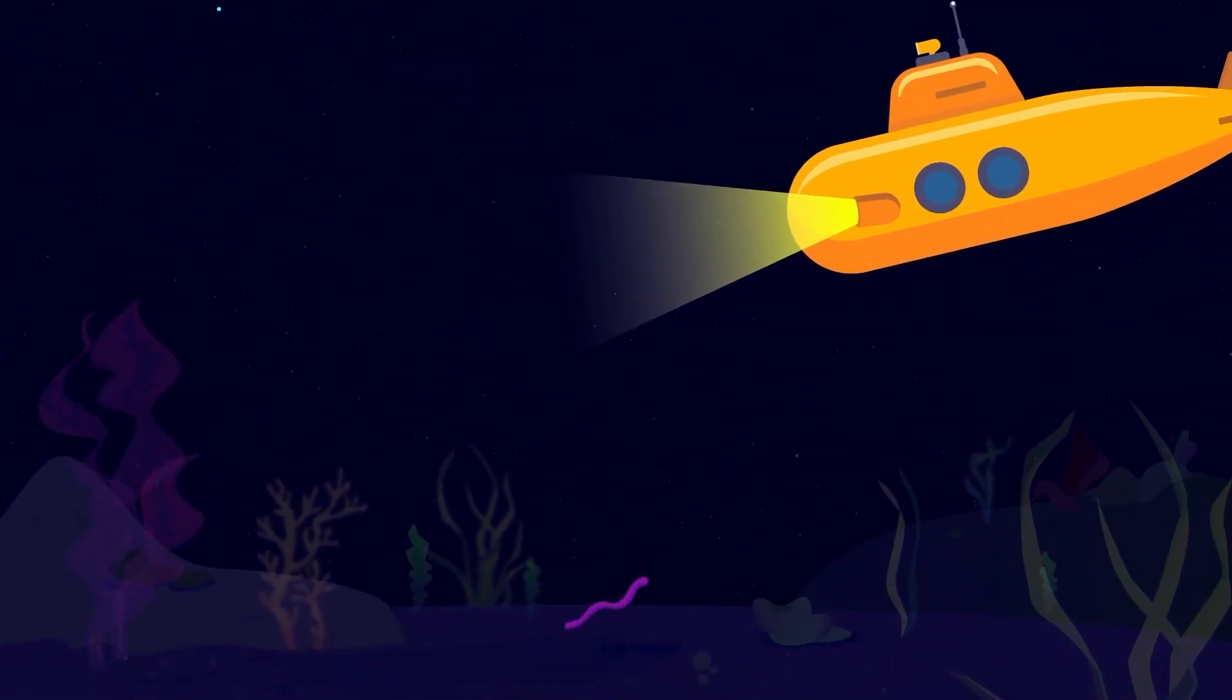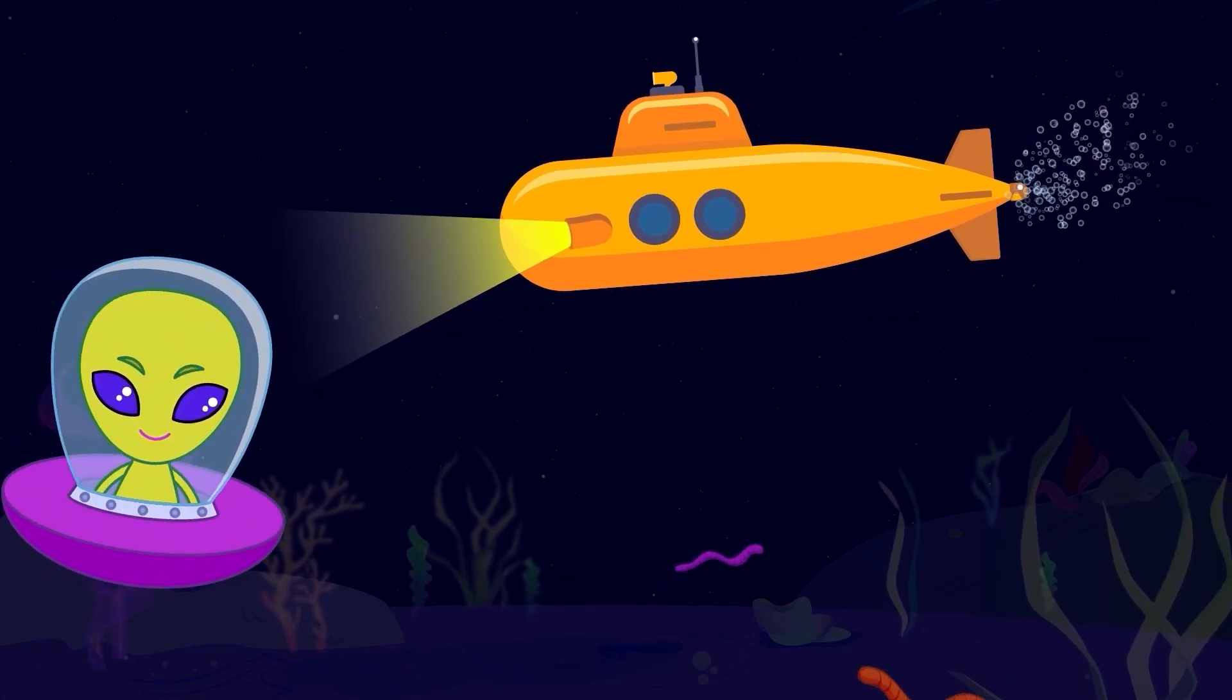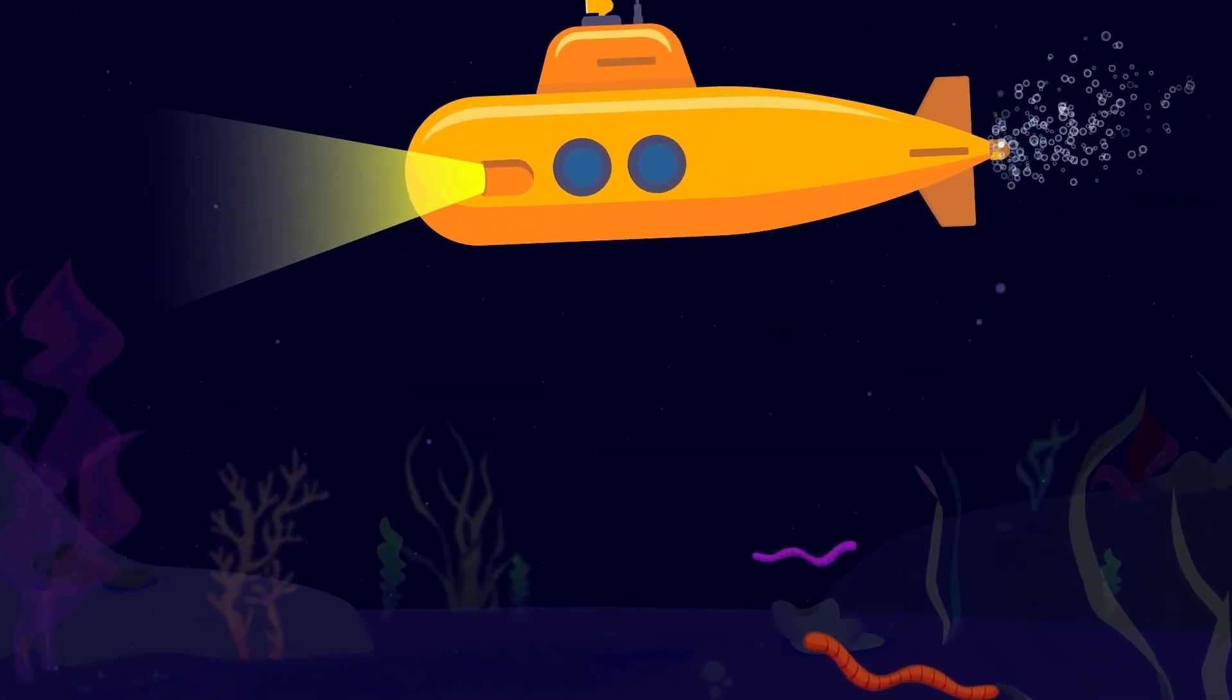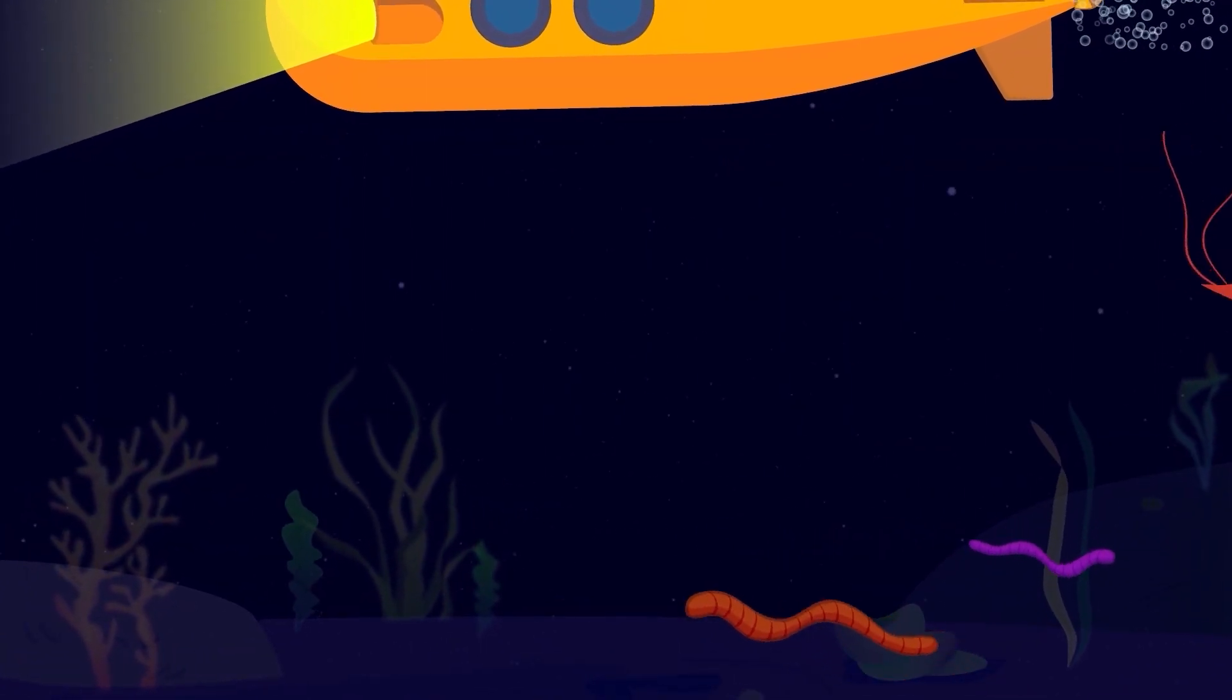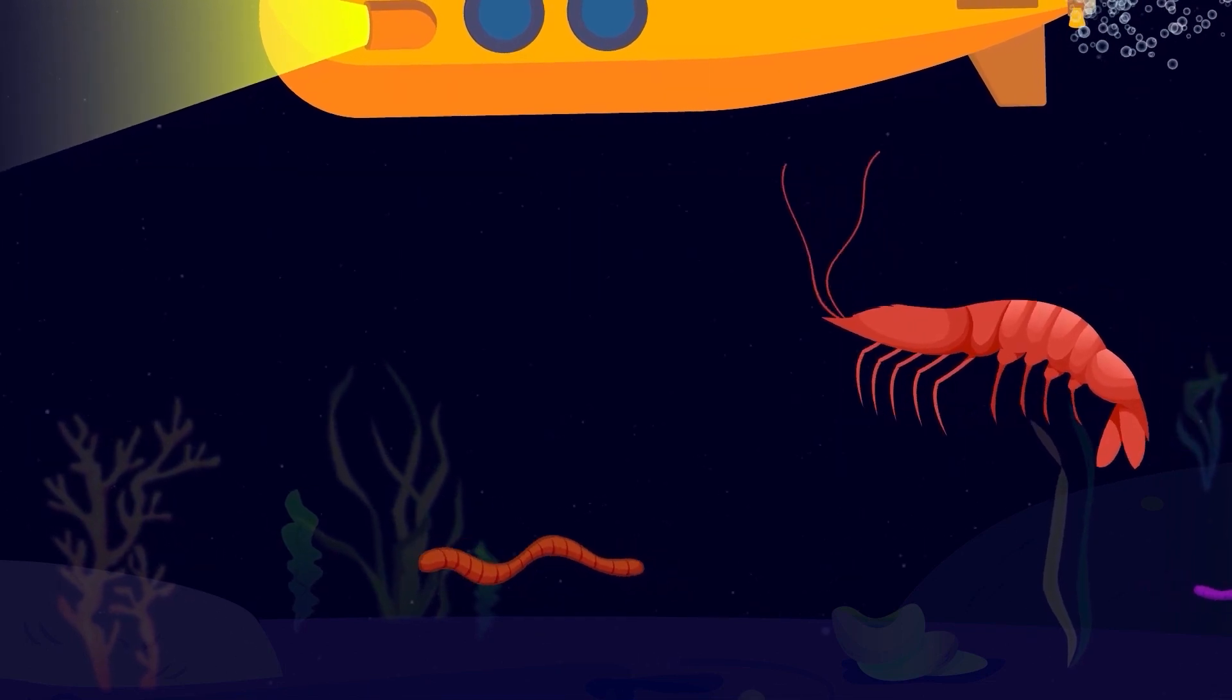We are in complete darkness. The pressure is immense, and the animals down here are akin to alien life forms. Sea cucumbers, worms, shrimp-like creatures, and microorganisms make up the residence of Challenger Deep, though those are just the ones we know of.